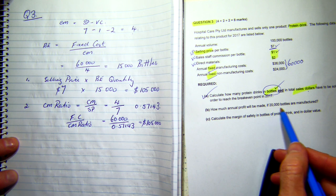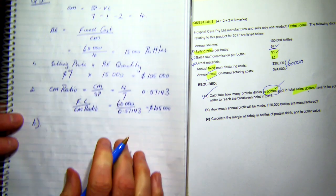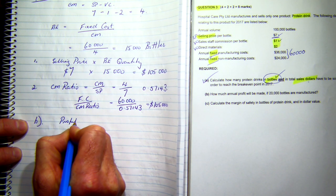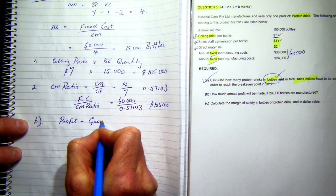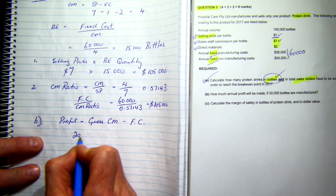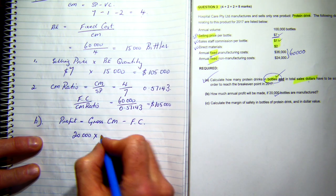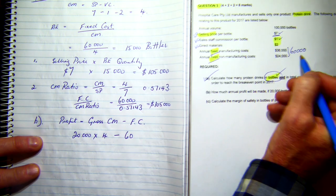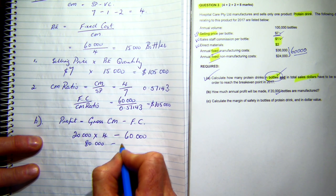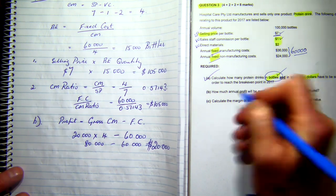And that's part A done. Now it says, how much annual profit will be made if twenty thousand bottles were manufactured? So now we'll do part B. So if we have twenty thousand bottles, my profit equals my gross contribution margin minus fixed costs. So my gross contribution margin would be twenty thousand, being the twenty thousand bottles here, times my contribution margin, which was four dollars per bottle, minus my fixed cost, which is sixty thousand, which we calculated over here. So it gives me eighty thousand minus sixty thousand equals twenty thousand dollars. So it takes care of B.